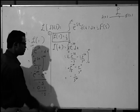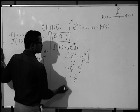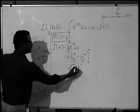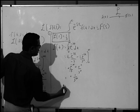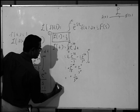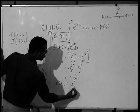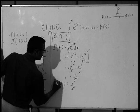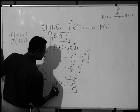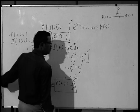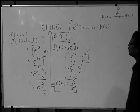Substituting the lower limit 0, minus of minus becomes plus. So e raised to 0 by s² is 1 by s². Therefore, Laplace transform of t equals 1 by s². This is formula number 2: Laplace transform of t is 1/s².